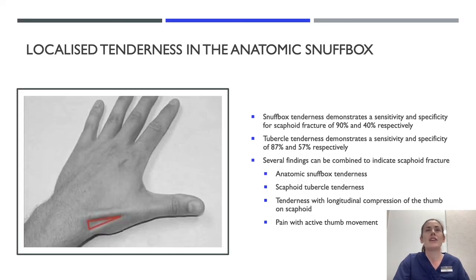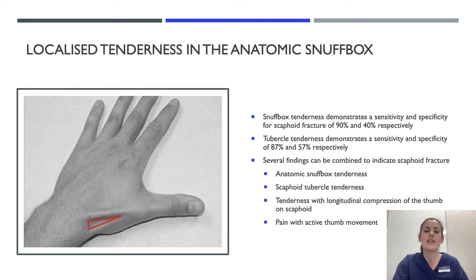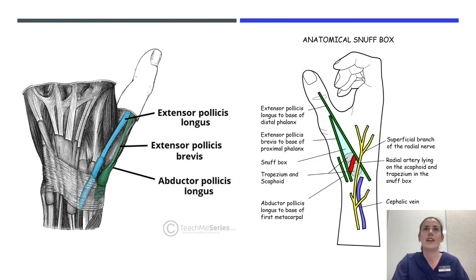On examination, localised tenderness in the anatomical snuff box is one of the signs. Snuff box tenderness demonstrates sensitivity and specificity for scaphoid fracture of 90% and 40% respectively. Tubercle tenderness demonstrates sensitivity and specificity of 87% and 57% respectively. Several findings together can indicate scaphoid fracture: anatomical snuff box tenderness, scaphoid tubercle tenderness, tenderness with longitudinal compression of the thumb on the scaphoid, and pain with axial thumb movement. The borders of the anatomical snuff box are the extensor pollicis longus, extensor pollicis brevis, and abductor pollicis longus, with the radial artery passing through it and the superficial branch of the radial nerve overlying it.